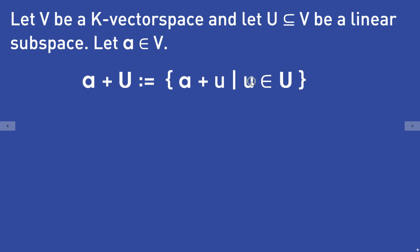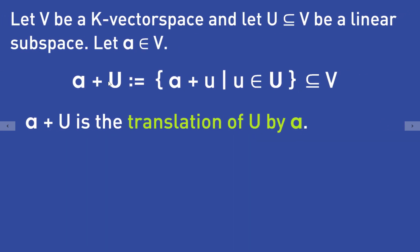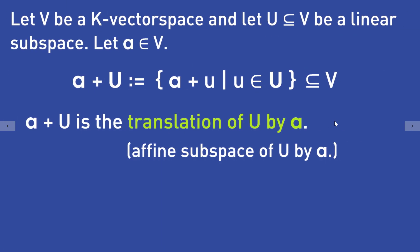That particular subset a plus U of the space v is called the translation of the subspace U by the vector a. You can also call it the affine subspace of U by the vector a.